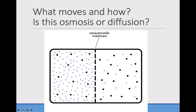Look at this image and think about what is moving. We have blue molecules representing water, a semi-permeable membrane in the middle, and black dots representing any solute. Pause the video and take a minute to think about what is going to move and how. In this case, water molecules are going to move from the area of high concentration to the area of low concentration — that's osmosis, the diffusion of water. If those solutes could also move, then we would have diffusion of those solutes as well.